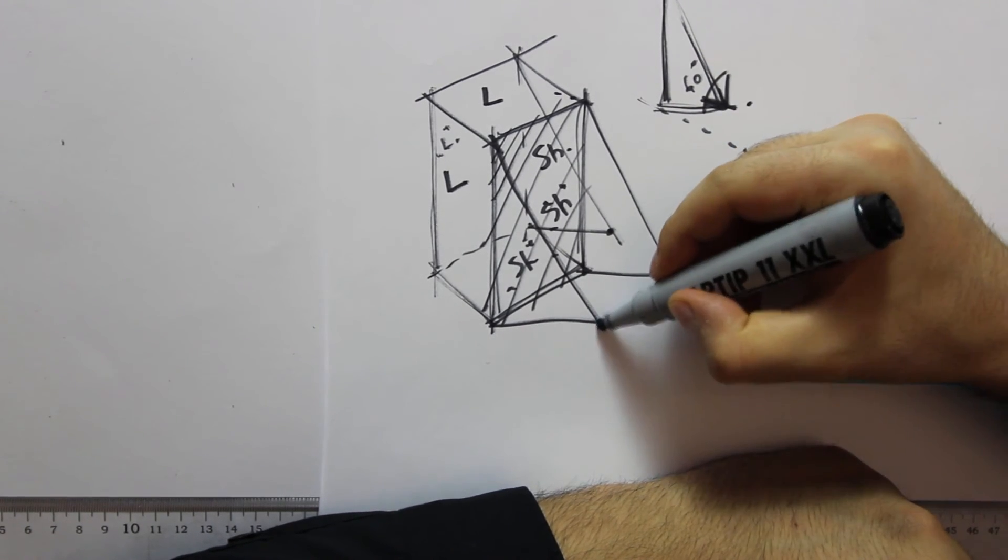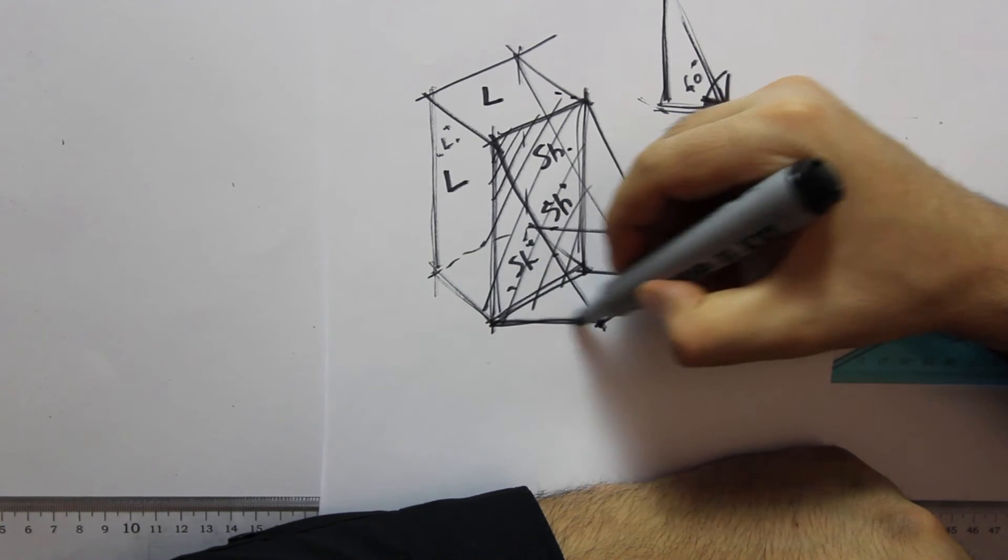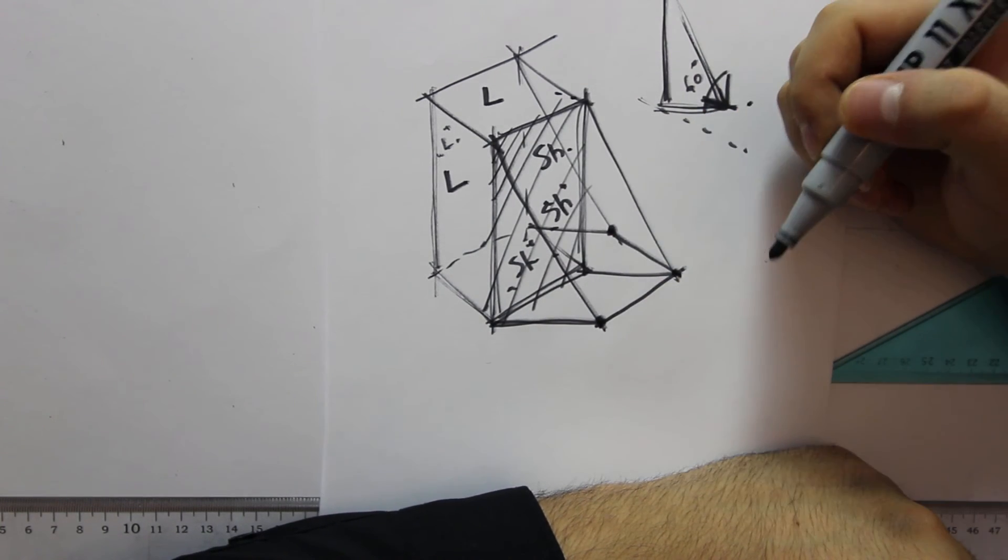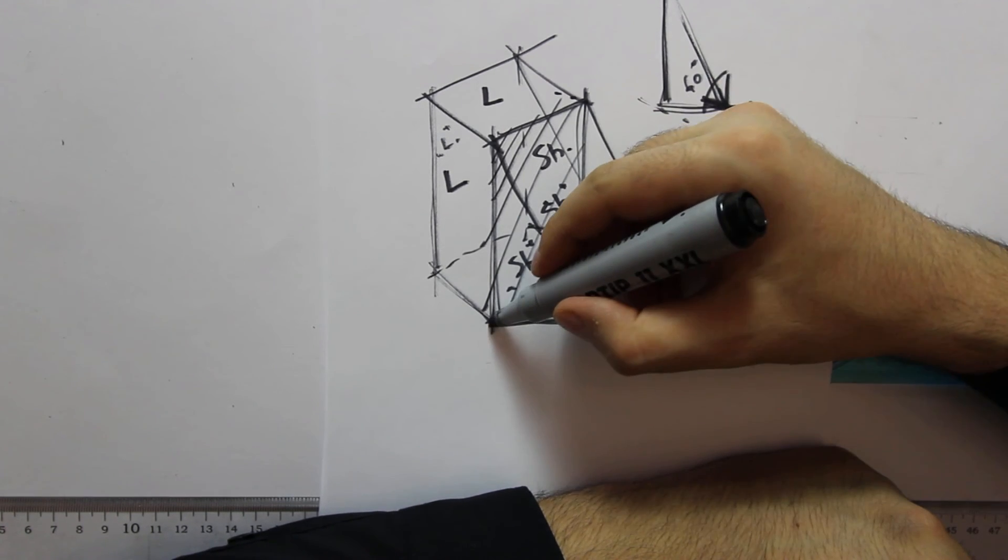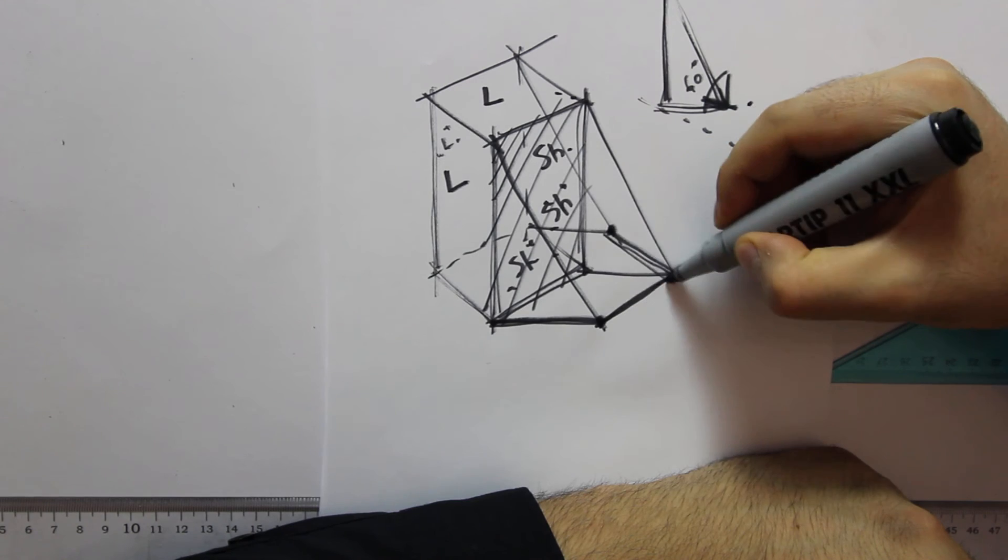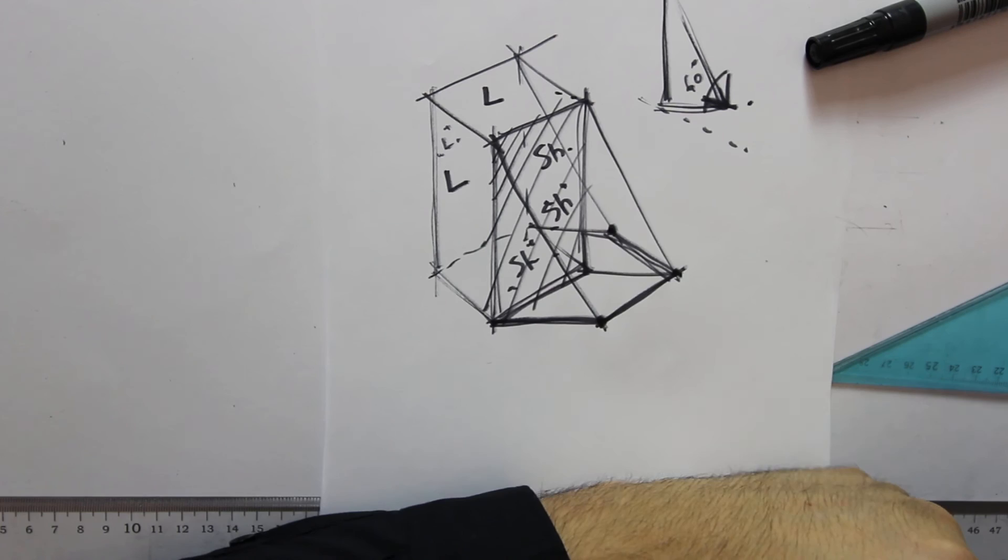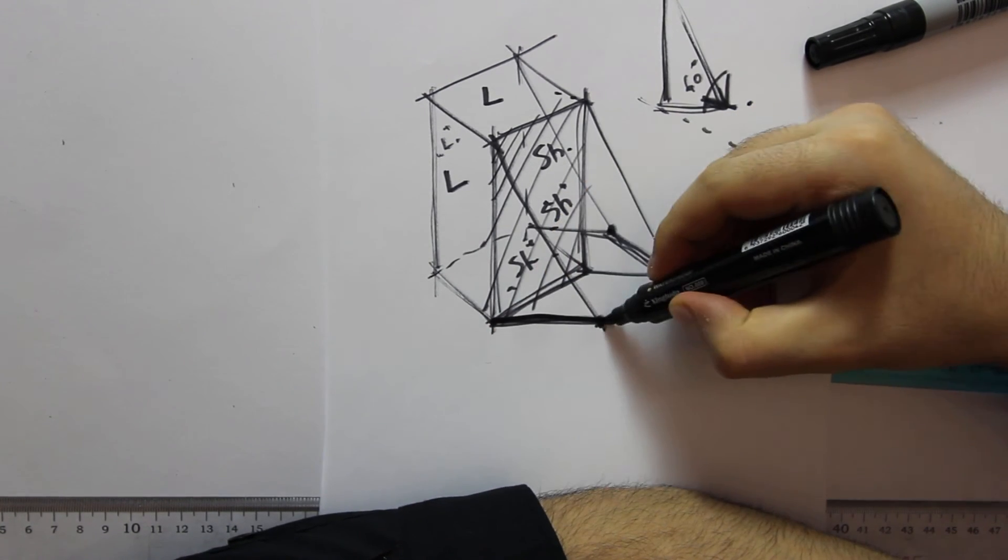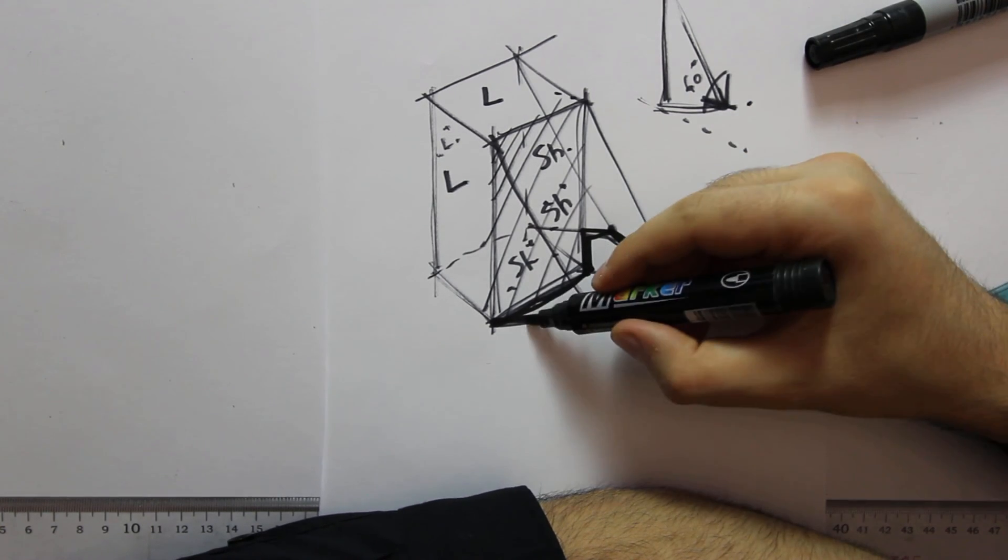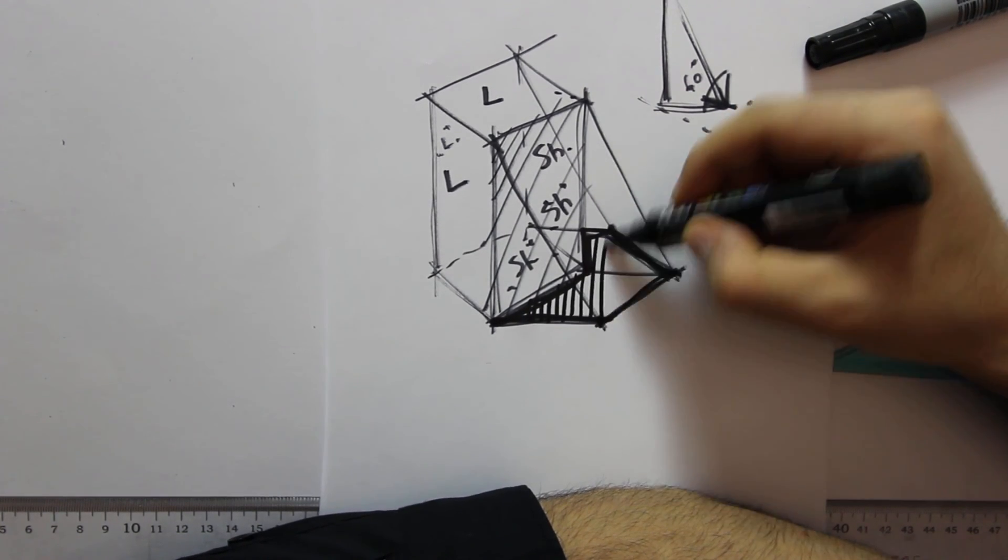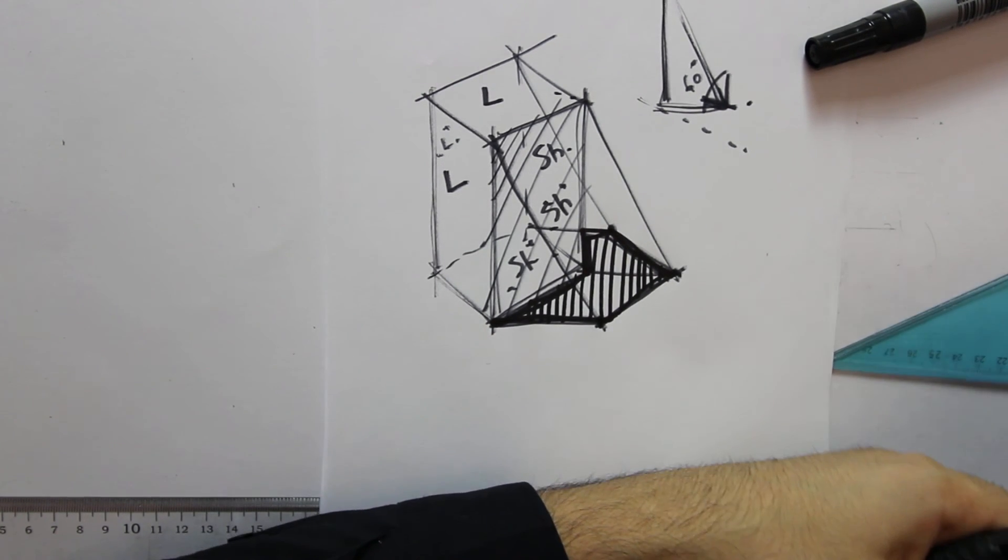And we project them, and these are our shadow points, and we need to connect them now. To get our cast shadow, we connect them, and we end up having this shape. We fill in its contour, and this is the cast shadow for our prism. Okay? Boom, let's go.